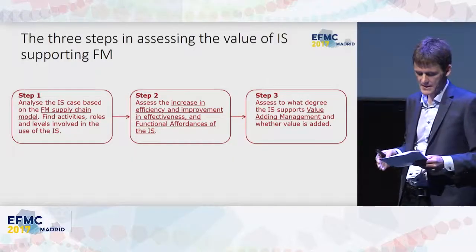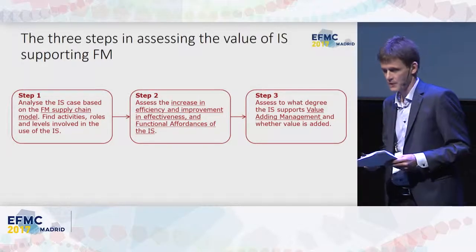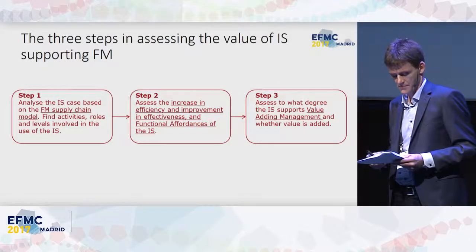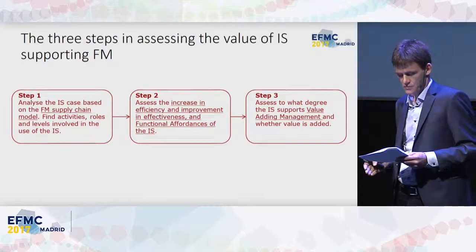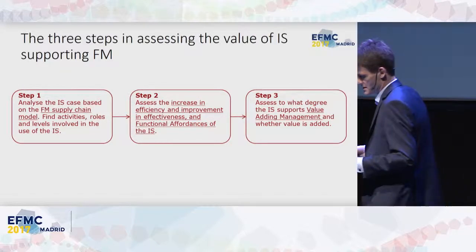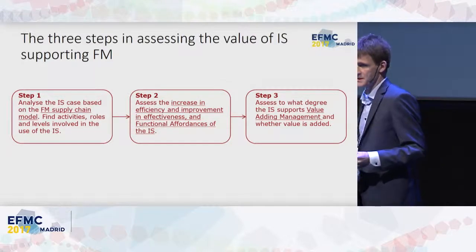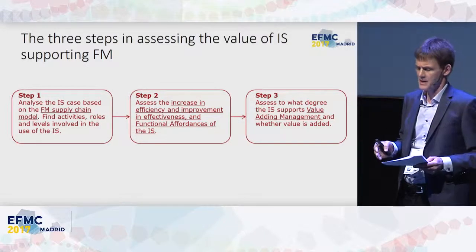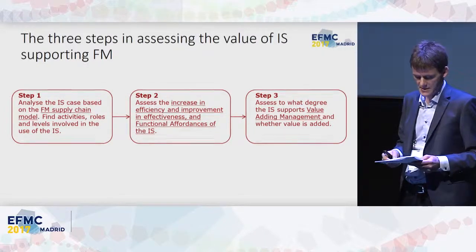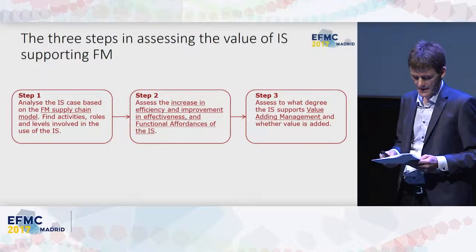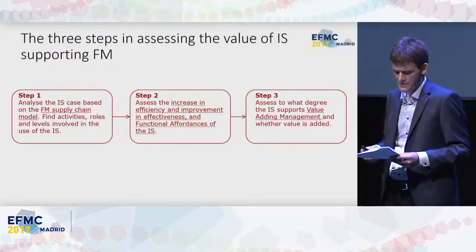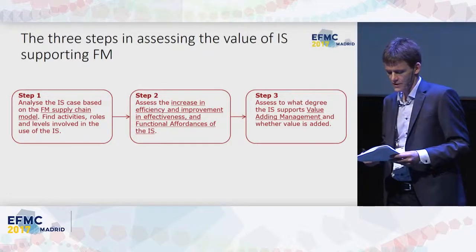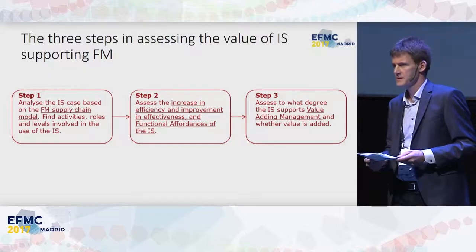The method consists of three steps. In the first step, the IS case is analyzed using the FM supply chain model. In step two, the increase in efficiency and improvements in effectiveness as a result of the IS being implemented is assessed. Finally, in step three, the degree or level of value added management is assessed.